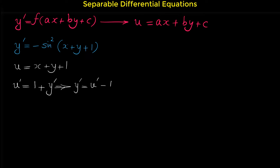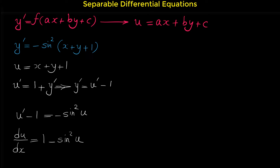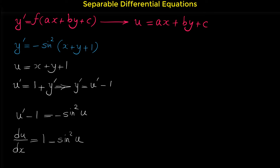This is the reason that we have to find the derivative of this relation. So if we replace y prime with u prime minus 1, we have u prime minus 1 equals negative sine squared of u. Note that u prime is actually du over dx. If we move 1 to the other side of the equation, we have du over dx equals 1 minus sine squared of u. This differential equation can be written in the form of a separable differential equation — we move 1 minus sine squared to the denominator of du and bring dx to the numerator.